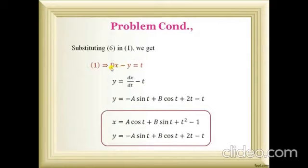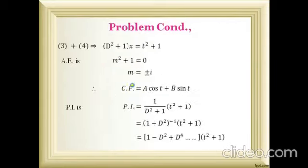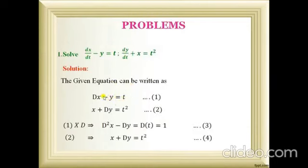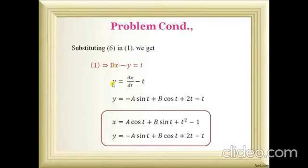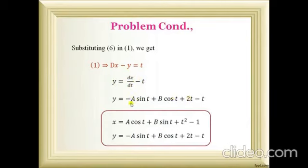I substitute dx/dt into the first equation. I choose the first equation, dx/dt − y = t, because it contains y alone without a derivative. Rearranging: y equals dx/dt minus t. Substituting dx/dt: y equals (−A sin t + B cos t + 2t) − t, giving y equals −A sin t + B cos t + t. This completes the solution for both x and y.